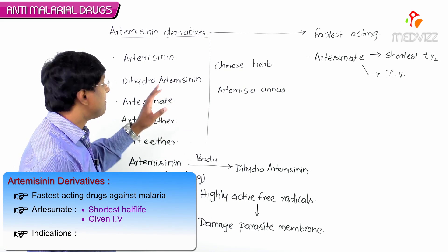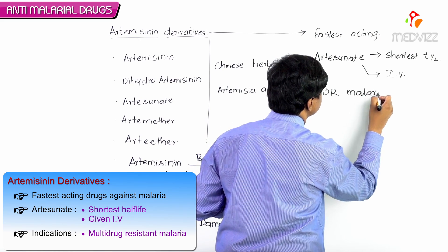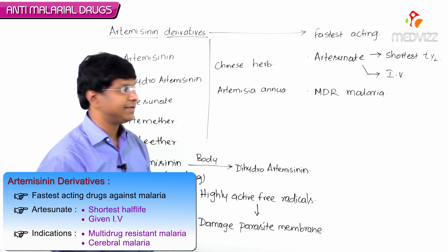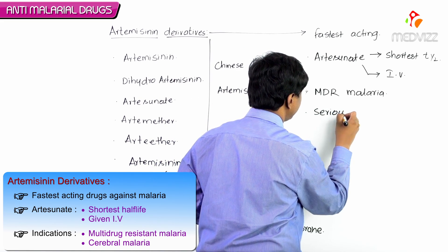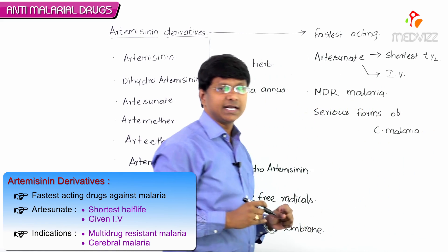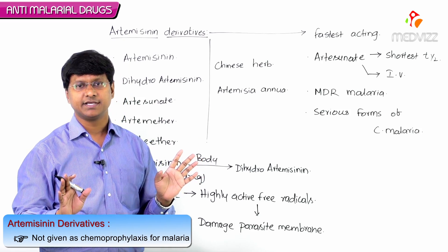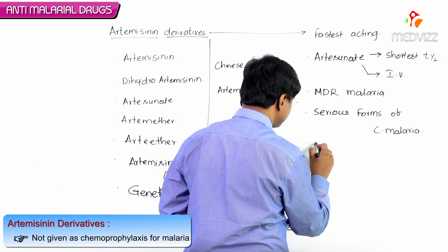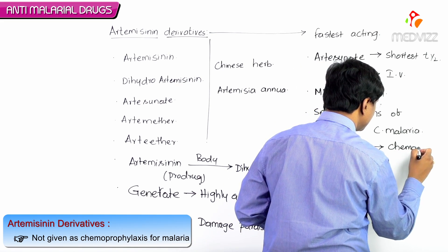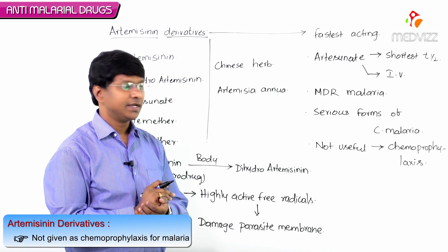Artemisinin derivatives can be used for the treatment of multi-drug resistant malaria. They are also used in serious forms of cerebral malaria. Remember, artemisinin derivatives are not indicated for chemoprophylaxis of malaria — they are only useful for treatment.